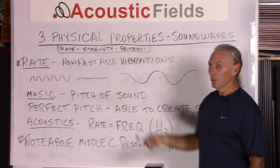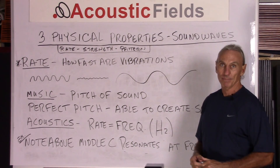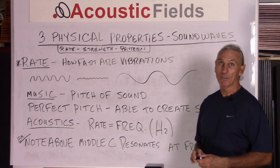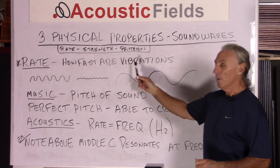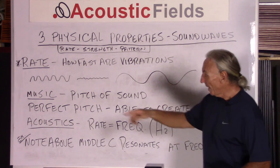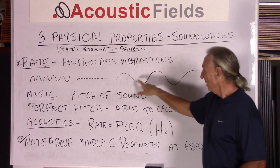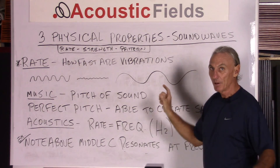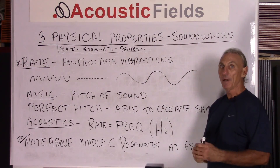Let's look at the first one: rate. What is the rate? How fast are the vibrations? We know that all sound energy is created by something moving, something vibrating. So rate is nothing but the speed of the vibration. If we look at it graphically, some wavelengths are tighter and some are longer — where the distance between the peak and the trough varies. This all speaks to the rate, or how fast the vibrations are.